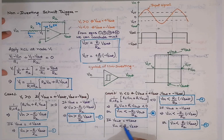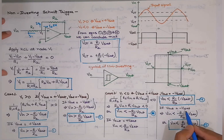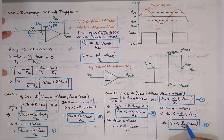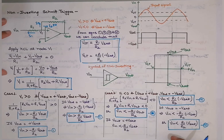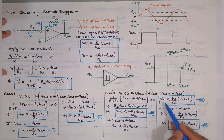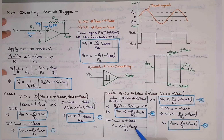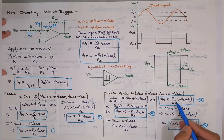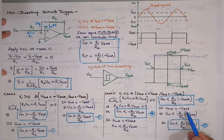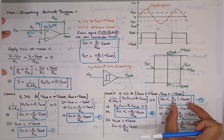If Vout is at +Vsat, then Vin < −(R1/R2)·Vsat. If Vout is at −Vsat, then Vin < (R1/R2)·Vsat. This again gives two values of Vin: if the previous Vout is +Vsat, Vin must be less than a negative value; if the previous Vout is −Vsat, Vin must be less than a higher (positive) value — the upper and lower threshold values.